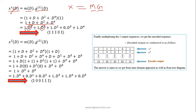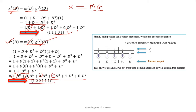Expanding into d^0, d^1 notation, the coefficients give us 1 1 1 0 1, which we represent in standard form. Similarly, we find the polynomial for the second output by multiplying the message polynomial with the generator sequence of the second output. We get 1 + d + d^3, and taking the coefficients we get 1 1 0 0 1, which we represent in standard form.